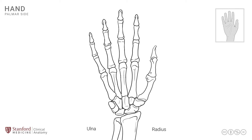This is the distal end of the ulna, and this is the distal end of the radius. The distal ends of these two bones, the ulna and radius, form a joint that is known as the distal radio-ulnar joint, which is seen right here.